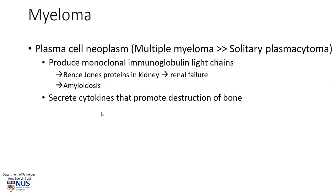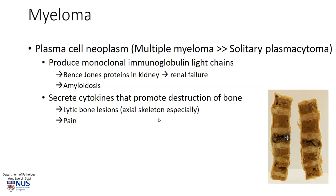These abnormal plasma cells also secrete cytokines, and these actually end up causing destruction of bony tissue. This is why we see lytic bone lesions, and they often prefer the locations of the axial skeleton, as we saw in the vertebral body example.